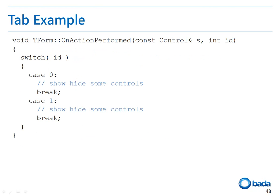The next function is the onActionPerformedListener function. In this function, you can perform a specific task according to the action ID received. Generally, when using tabs, the screen switching effect is provided by showing or hiding some of the controls.